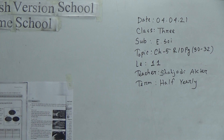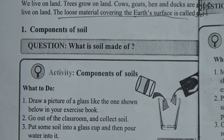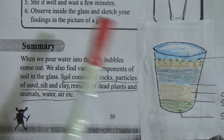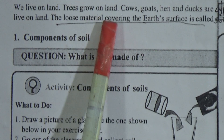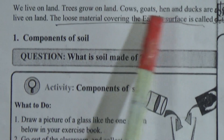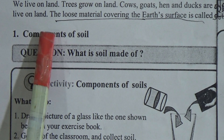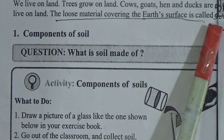My dear students, let's start our class. Today's topic is chapter 5, and the chapter name is Soil. Take your elementary science book and follow this class with your textbook. We live on land. Trees grow on land. Houses, courts, and tracks are also on land.